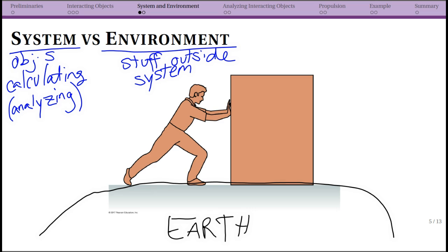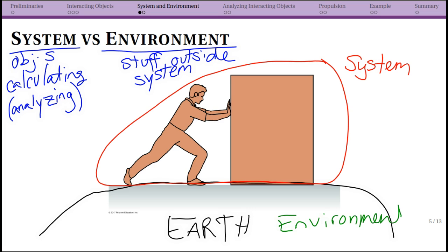In general in physics class you don't want to consider the entire earth as being part of your system. There will of course be a few cases where that's not true, but usually we don't want to analyze what's happening to the earth. So let's choose the person and the box to be my system. What that means is that the earth is my environment.